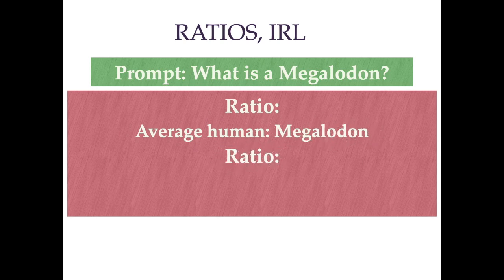In that ratio we're talking 1.8 — not 1.8 of a human, but 1.8 meters of a human to 18 meters of a Megalodon. If an average human is 1.8 meters from foot to head, then a Megalodon from the tip of its nose to the end of its fin is 18 meters. Don't be scared about what I'm about to show you.